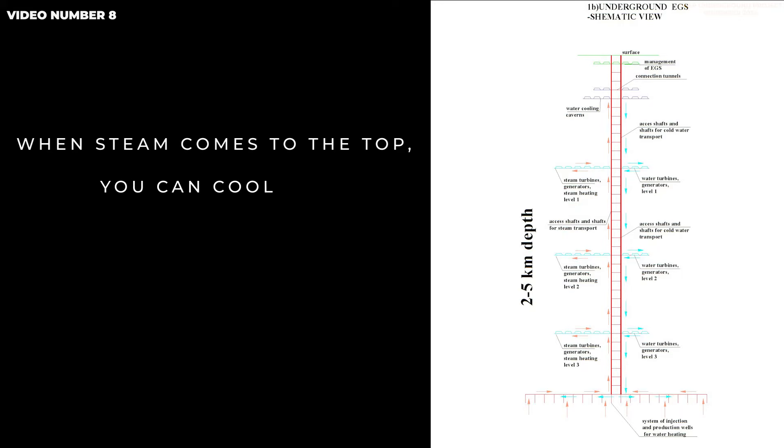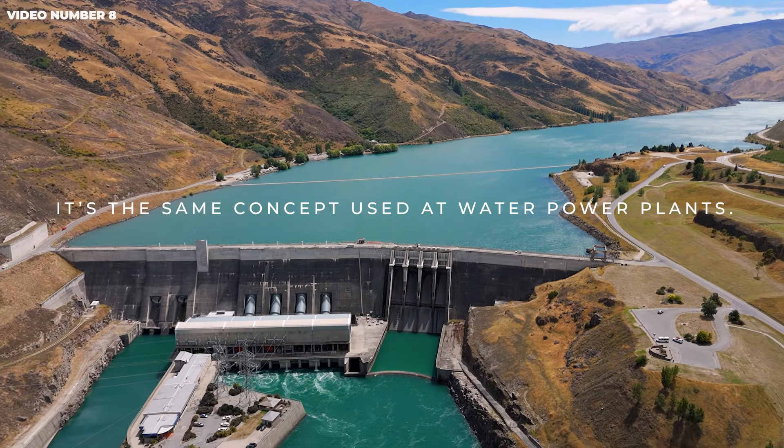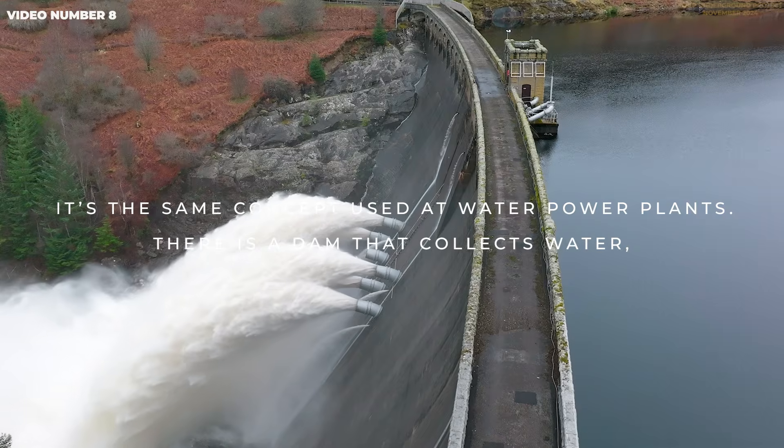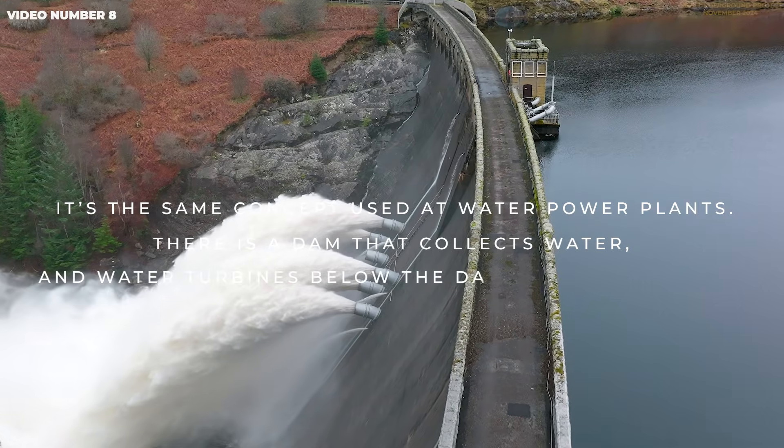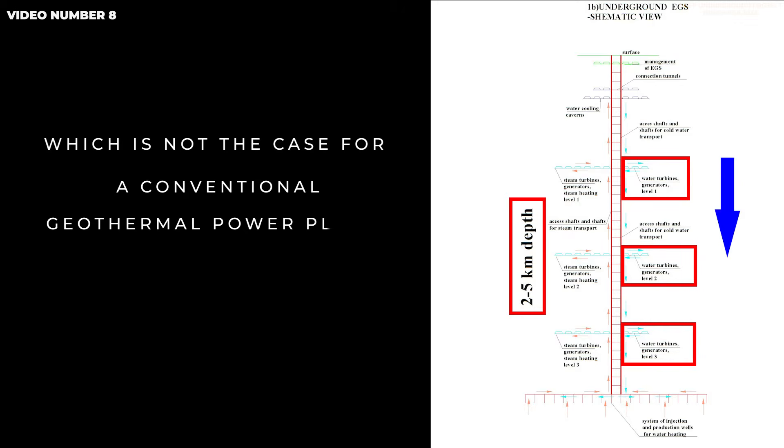When steam comes to the top, you can cool it to create water. Having the water at such a level is ideal for using it to produce electrical energy again. It's the same concept used at water power plants. There is a dam that collects water, and water turbines below the dam generate energy. The amount of energy produced depends on the amount of water and the height difference on the way down, which is not the case for a conventional geothermal power plant.